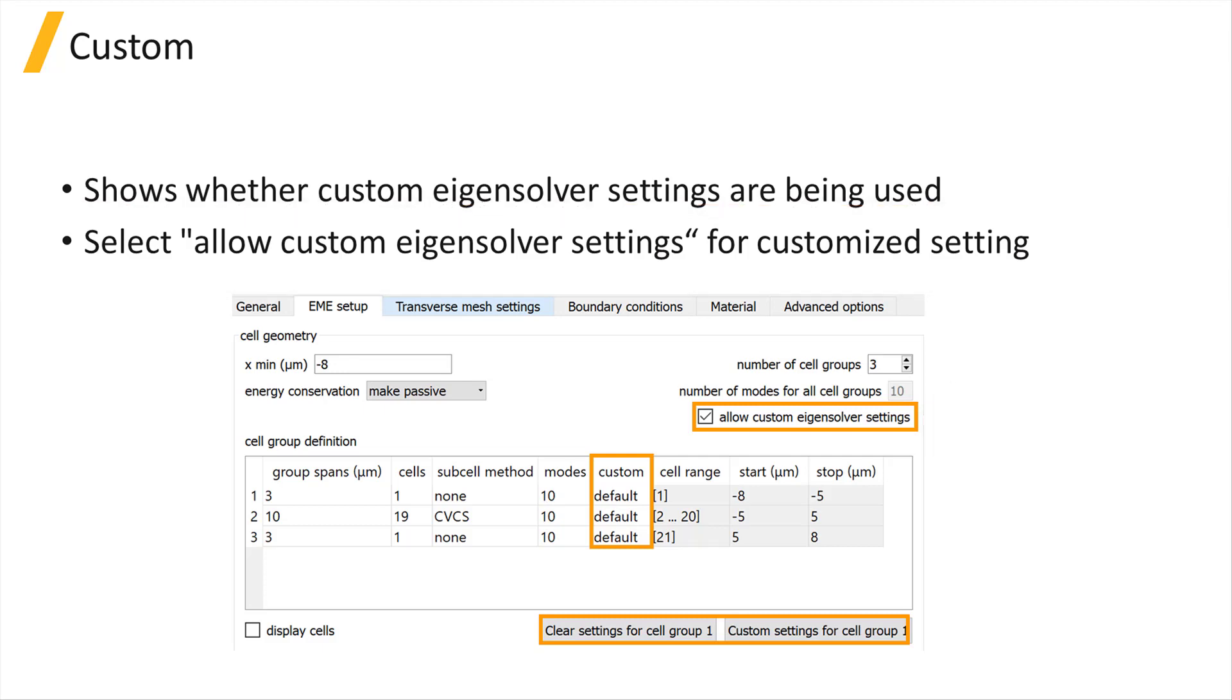Select the cell group in the table and click the Custom Settings for Cell Group X button where X will be the selected cell group number. Clear by clicking the Clear Settings for Cell Group X button. We will show an example of how to set the custom settings in a demo later in this section.